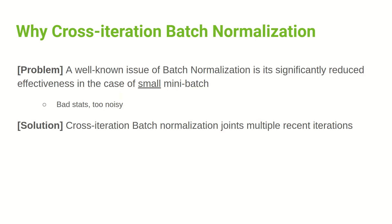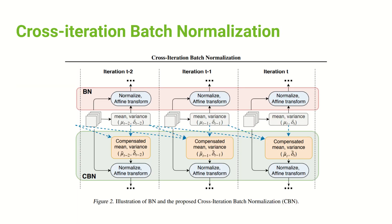The problem with Cross-Iteration Batch Normalization is: what if you don't have enough mini-batch? If the mini-batch is small, you have bad, very noisy statistics, and your training tends to diverge rather than converge. So the Cross-Iteration Batch Normalization joins multiple recent iterations to solve this problem. The next diagram shows more intuitively how it works.